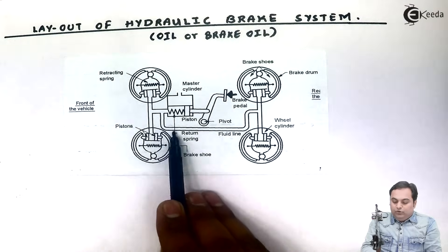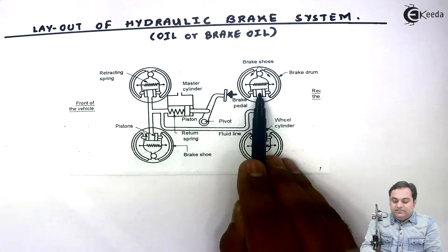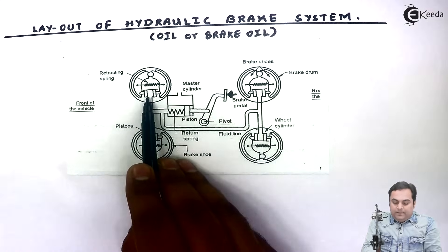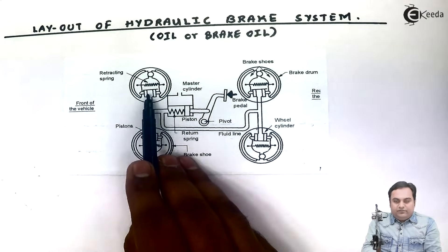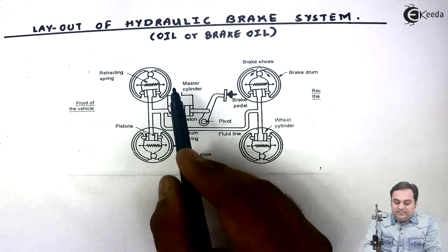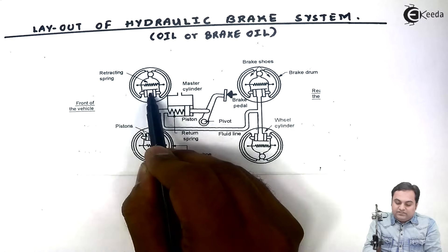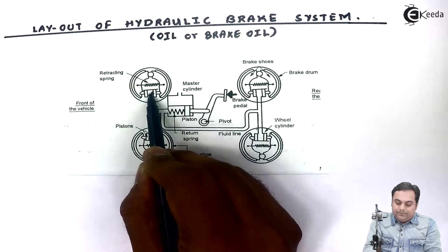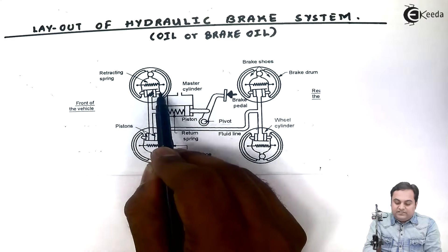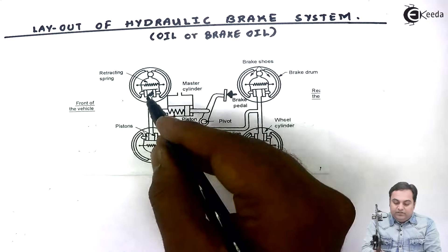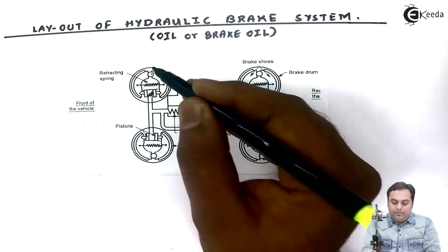Once the hydraulic oil passes into one of the wheels, it pushes these pistons. There are small pistons, and the brake oil exerts force on each of the pistons.